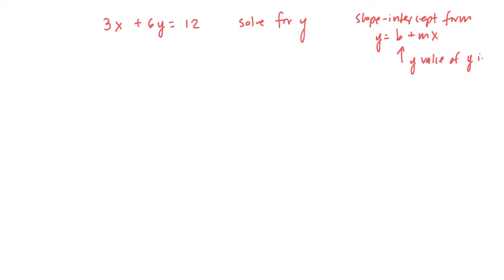So b is the y value of the y-intercept. What that's going to look like is (0, and then whatever that number is). And then m is what we call the slope.